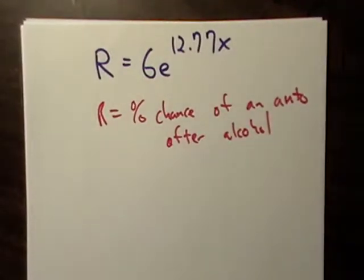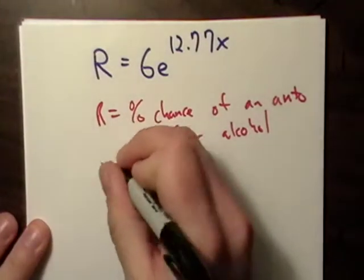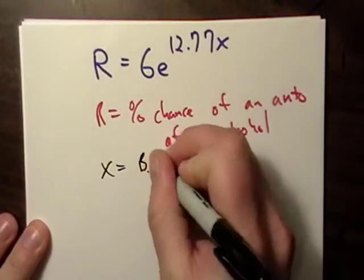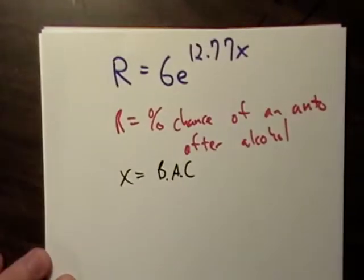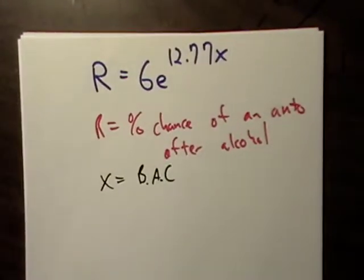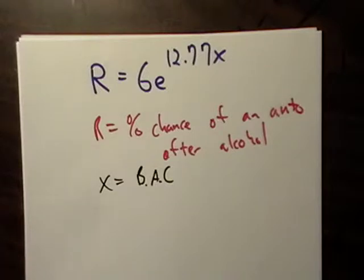And X equals your BAC, your blood alcohol concentration. And if you're in college, probably high school, you probably already know all about blood alcohol and concentration.